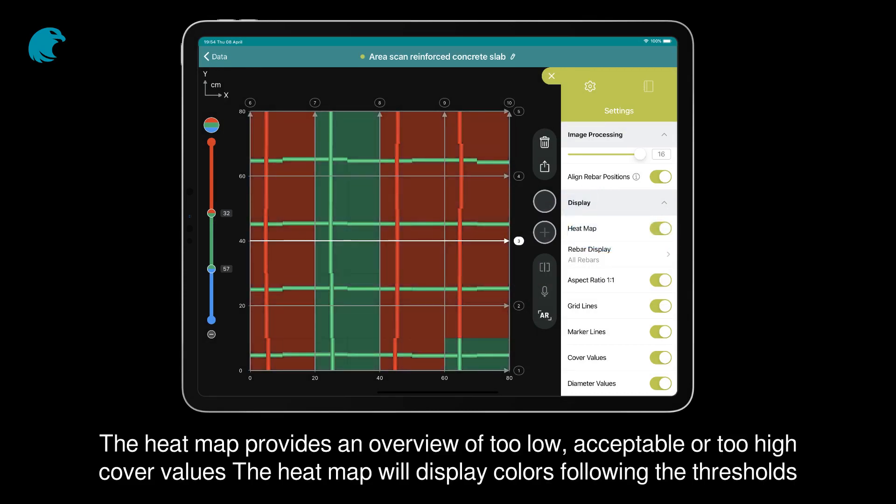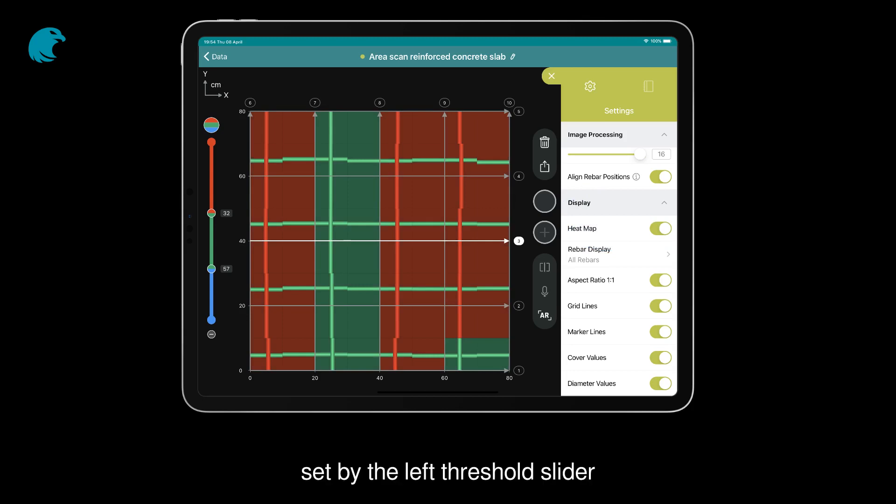The heat map provides an overview of too low, acceptable, or too high cover values. The heat map will display colors following the threshold set by the left threshold slider.